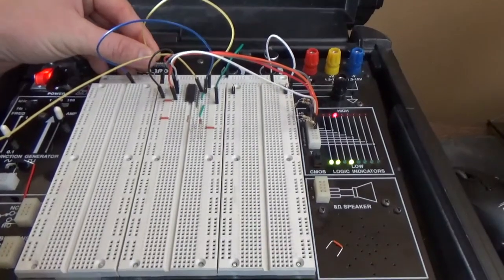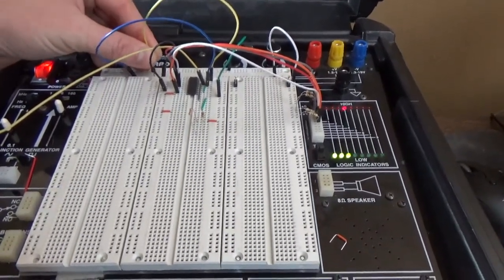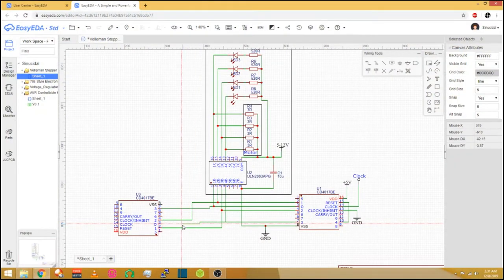However toggling the VCC pin on each chip has a more convincing result. Pulling this pin low pulls all of the outputs low. So if we toggle which chip is powered we can change the pulse order.